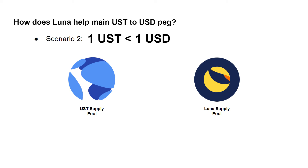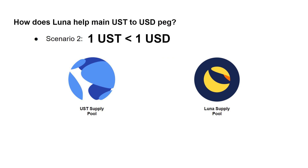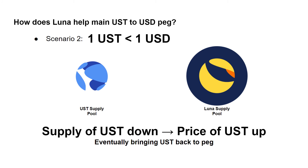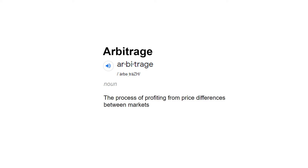Similarly, when demand for UST is low — perhaps during a bear market or due to bearish sentiment — UST drops below $1. In this scenario, the protocol does the opposite and incentivizes users to burn UST and mint LUNA, reducing the supply of UST and bringing the price back up to $1. When I first heard this, I wondered why users would actually do that.